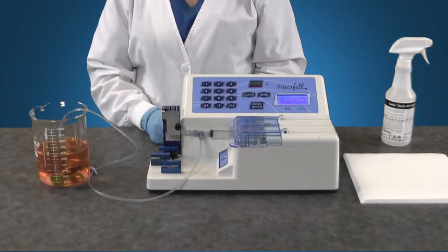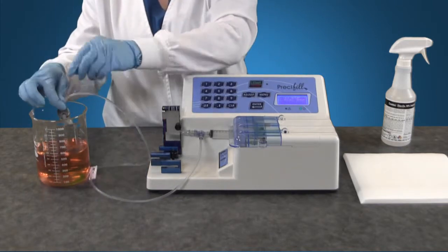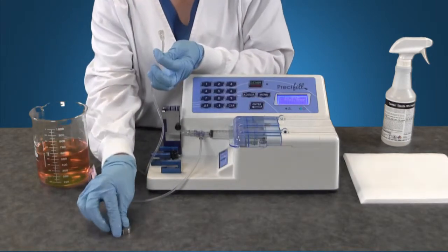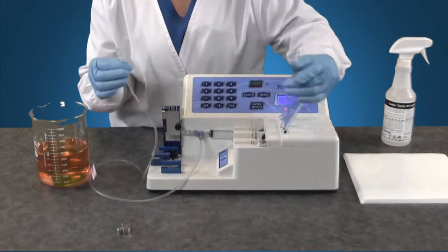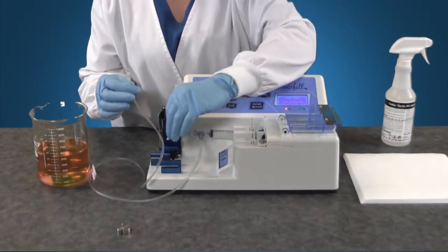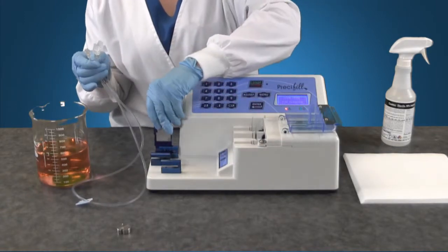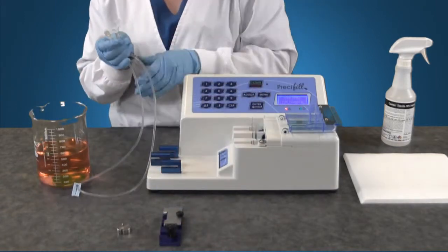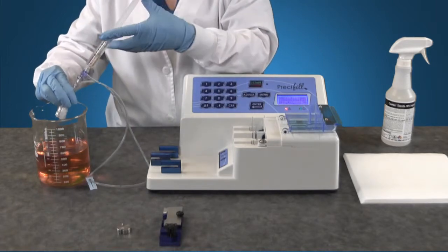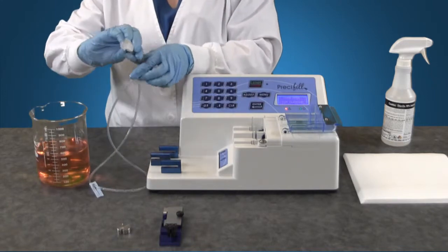Once you finish your batch remove the tubing set end from the solution container and remove the anchor. Remove the master lure lock syringe from the port and the tubing set from the block holder. Draw back on the syringe plunger and remove all solution from the tubing set back into the solution container.